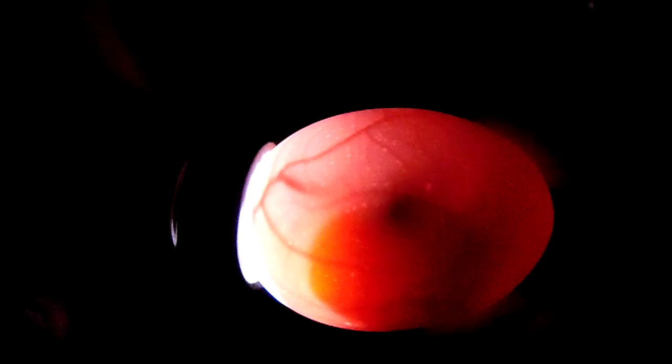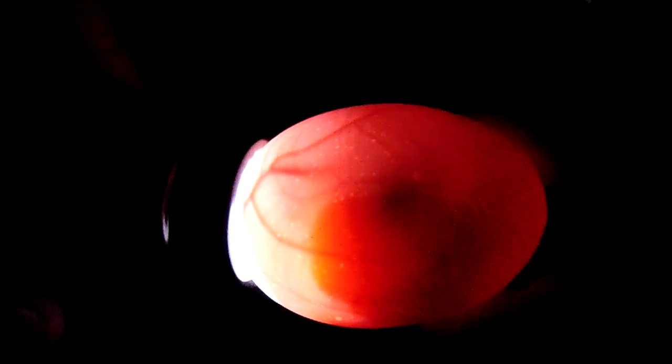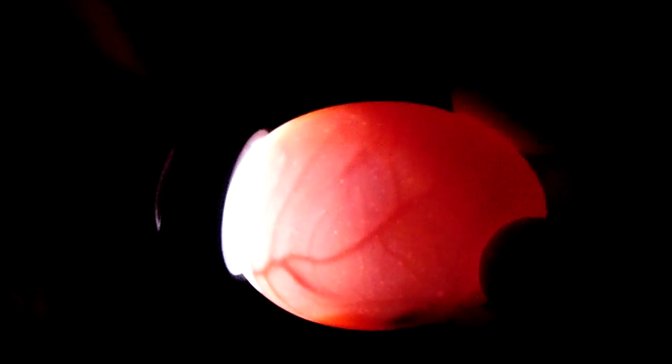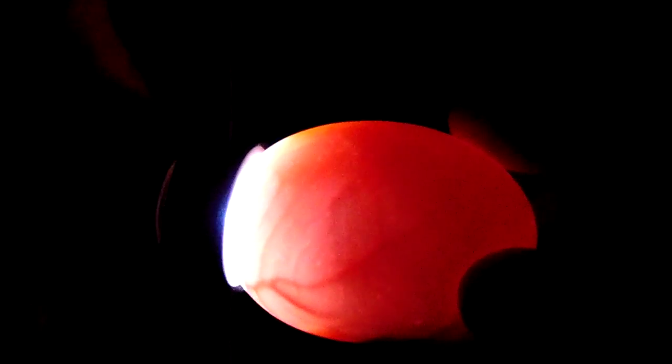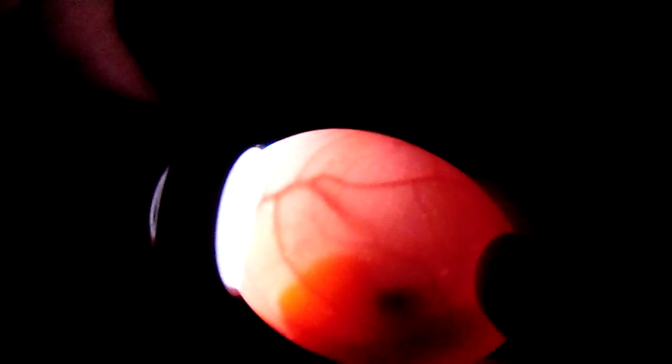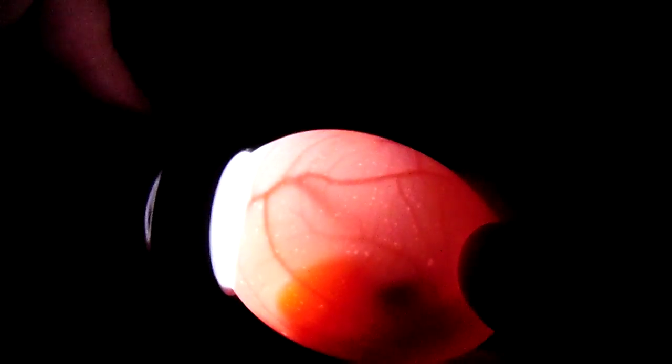You can see a dark spot right about here, and we just figured that's probably the eyeball. Notice the spiderweb of veins you can see there - nice vessels full of blood.